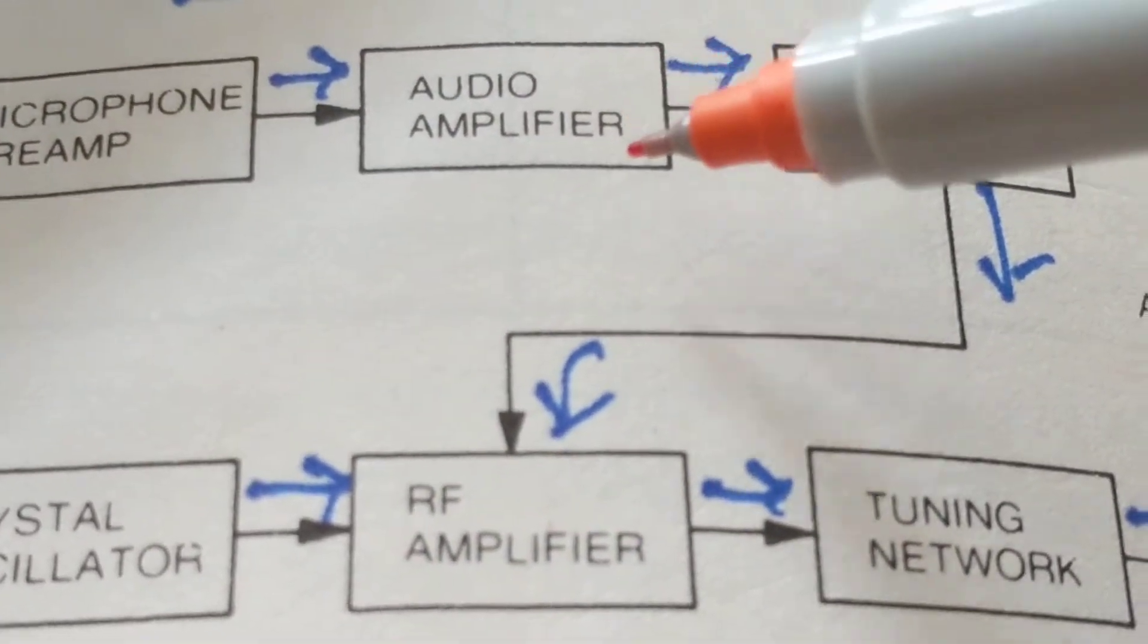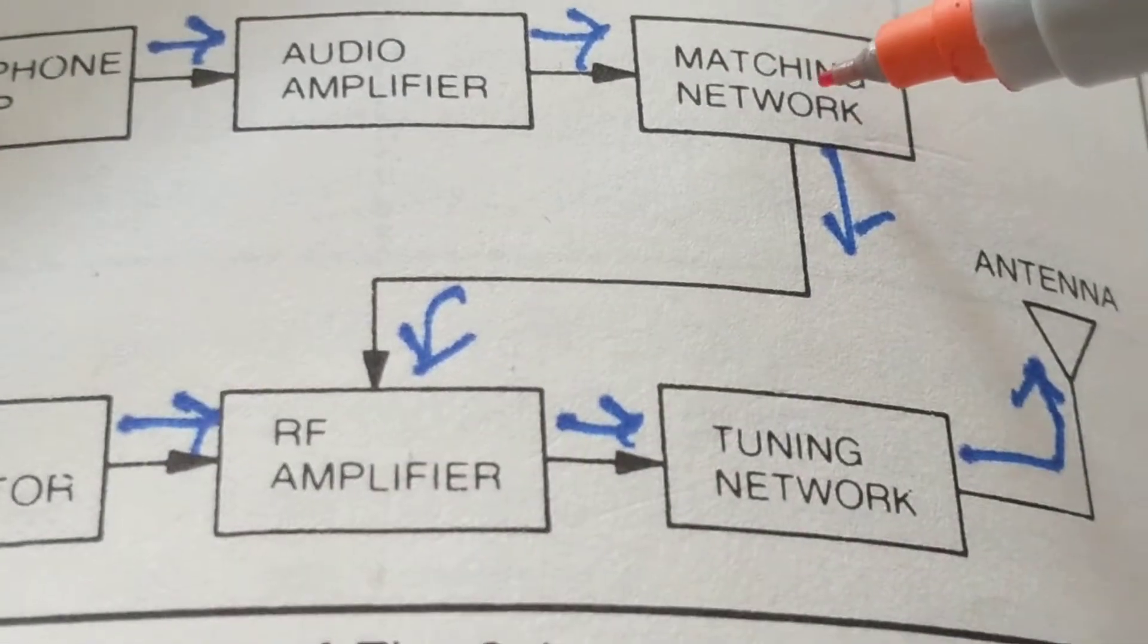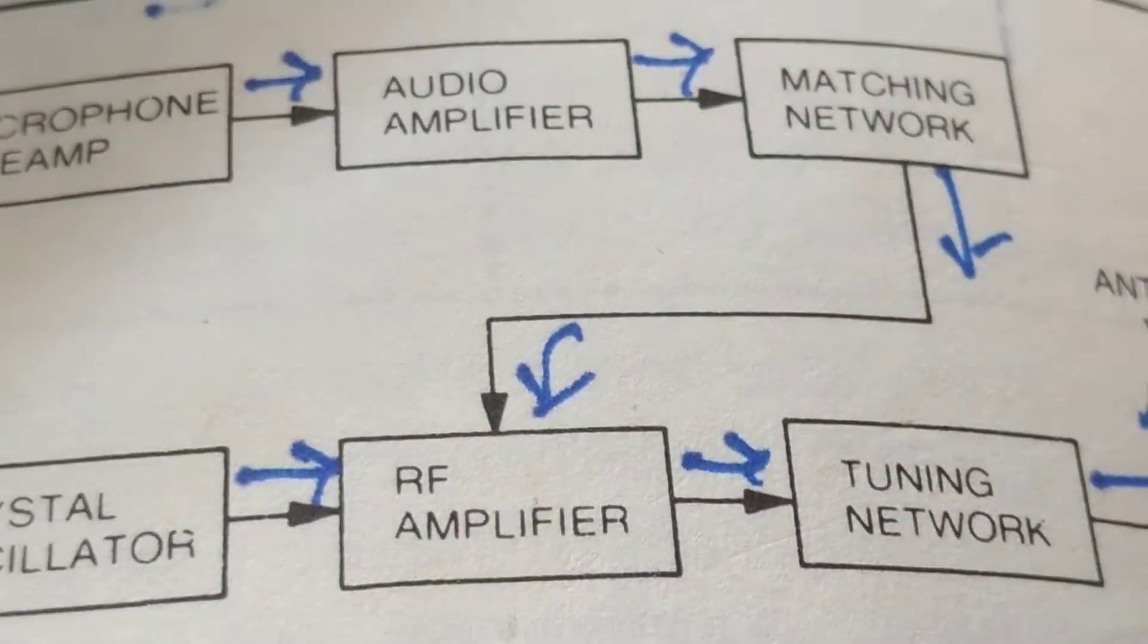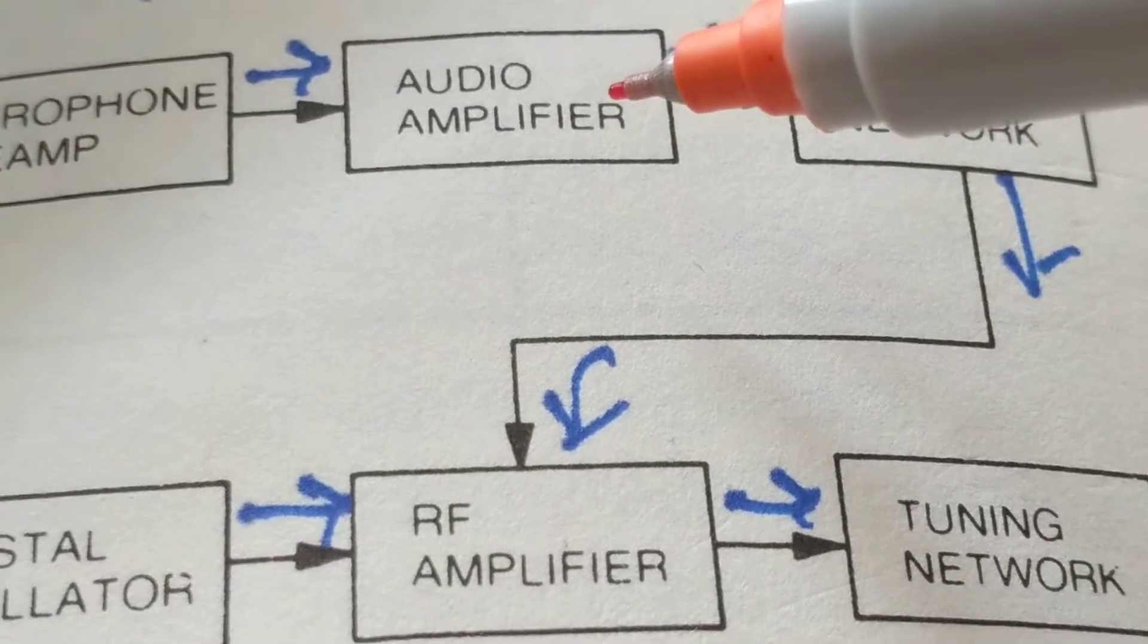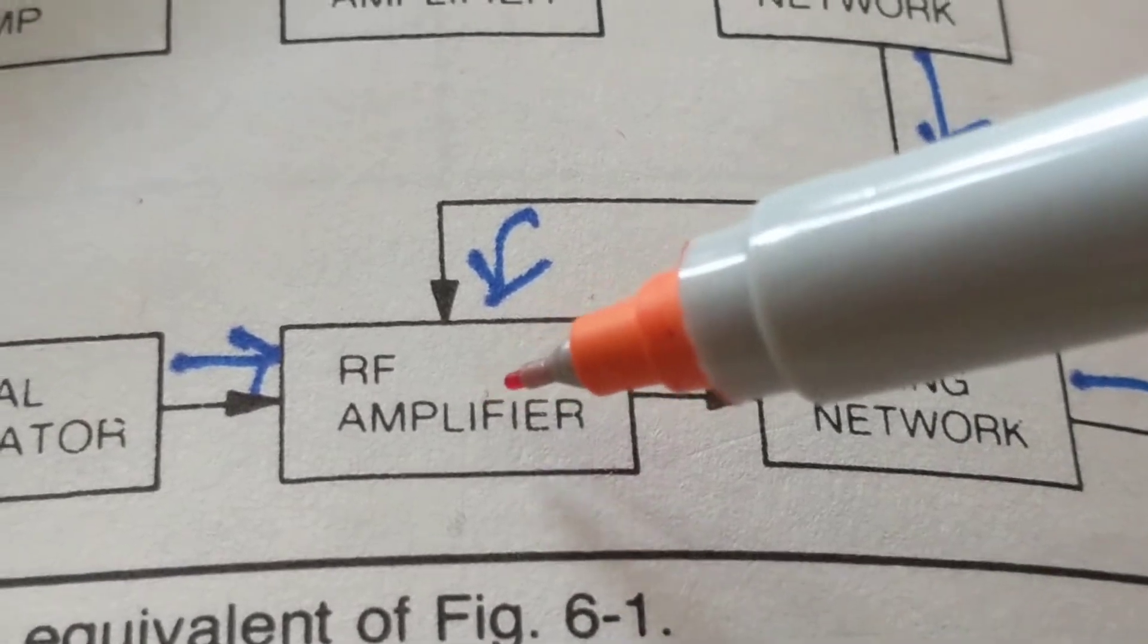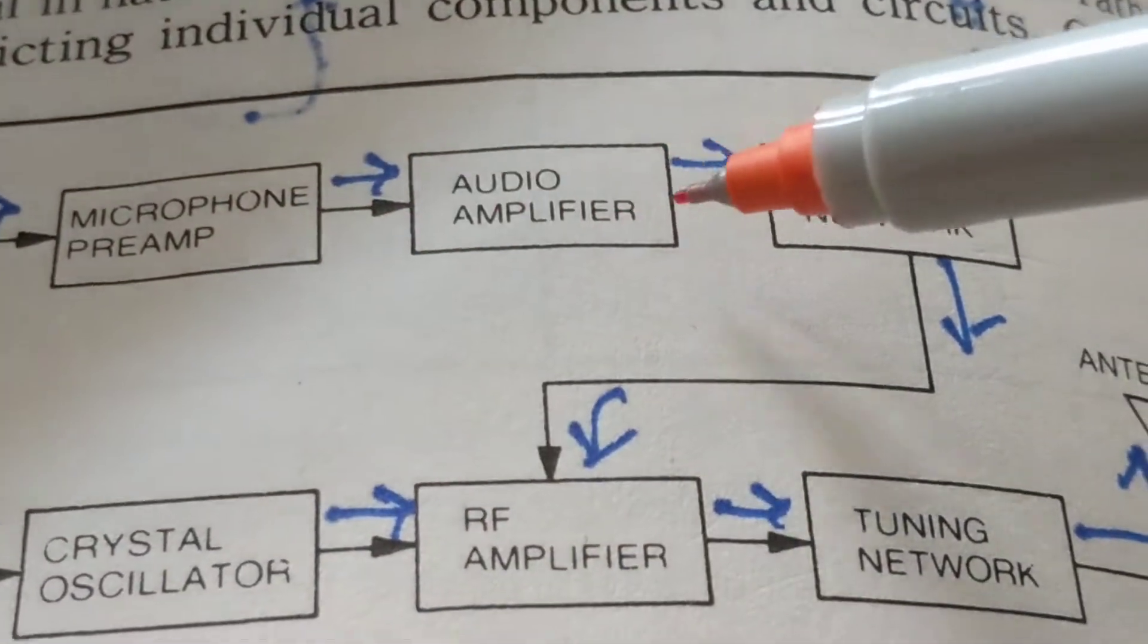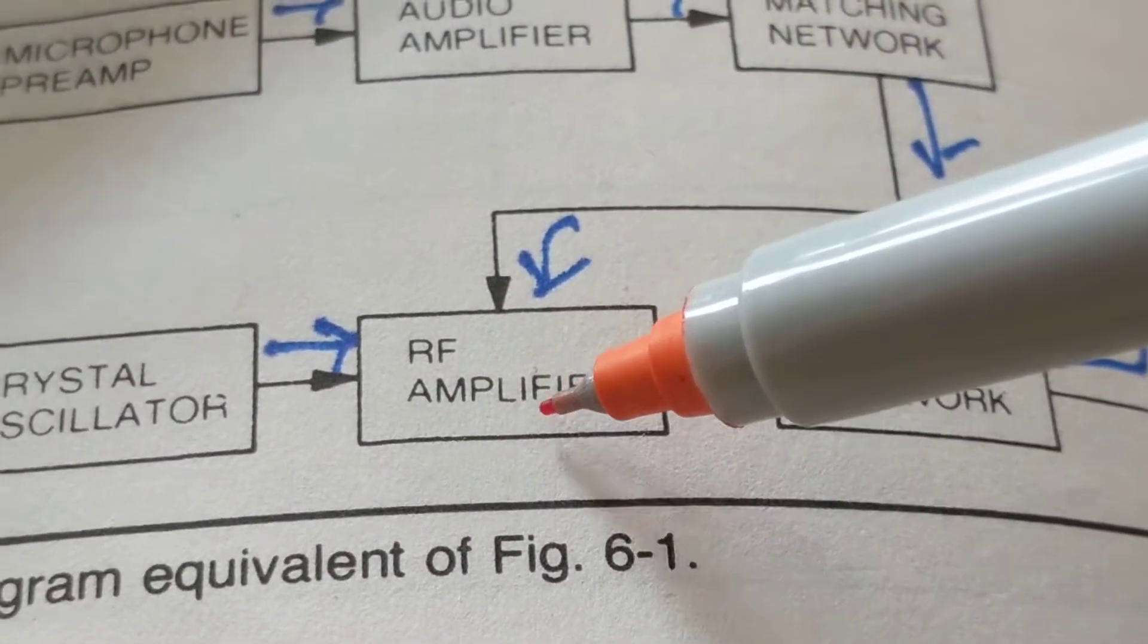The microphone needs an amplifier. We have to amplify the signal strength when you speak into a microphone, so it eventually goes to an RF amplifier. Audio amplifier is audio - 1,000 Hz, 2,000 Hz, up to 10,000 Hz. RF amplifier in this is in the megahertz. This one over here is audio frequencies, and this is in the megahertz.